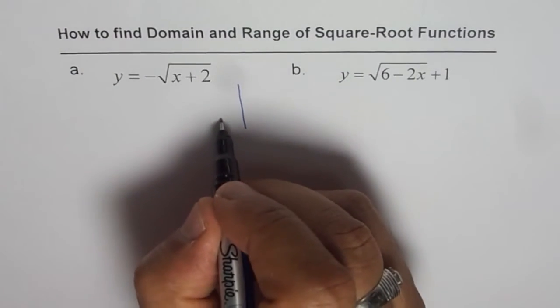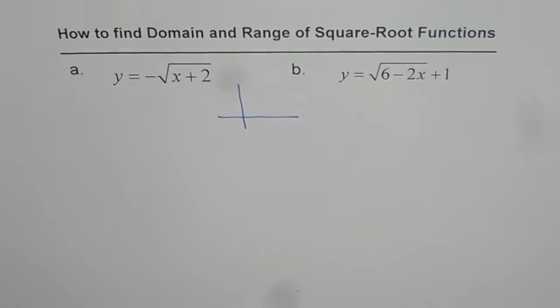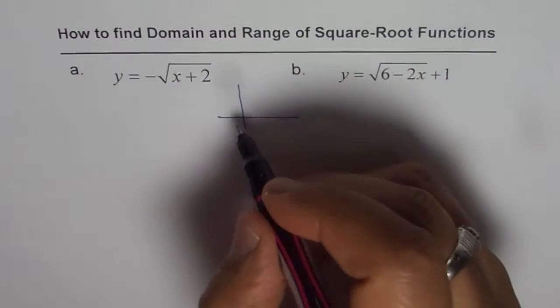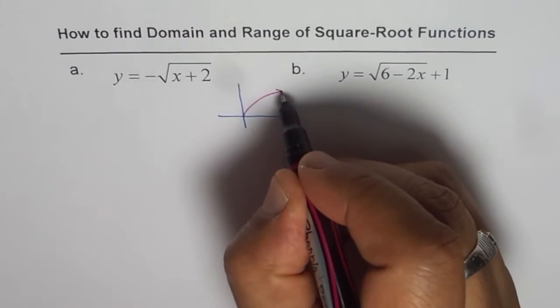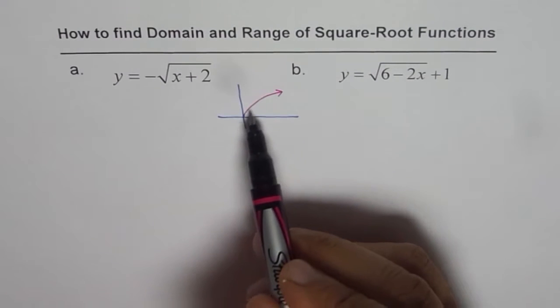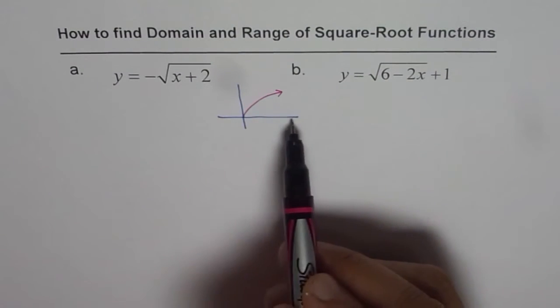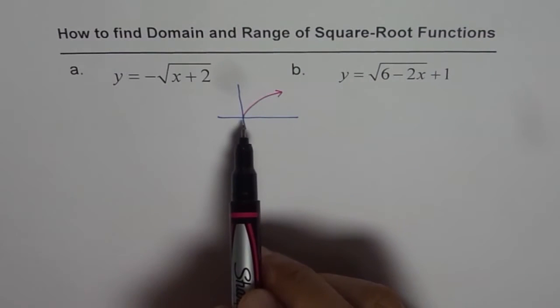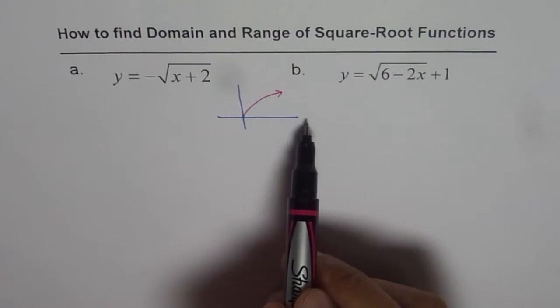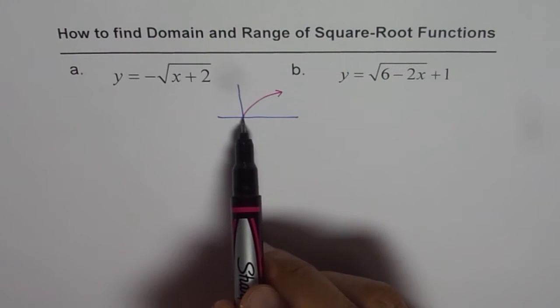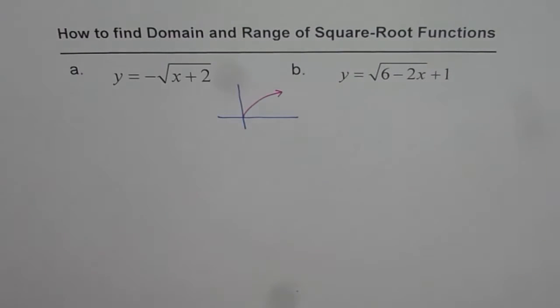So let us understand our parent function first. Square root x can be drawn as this. It is a function which is always increasing, always in coordinate 1 starting from 0. Domain and range both are restricted. Domain is always greater than or equal to 0 and range is always greater than or equal to 0. So the function basically is in coordinate 1.